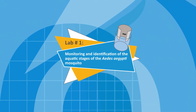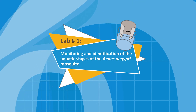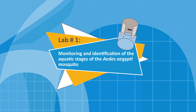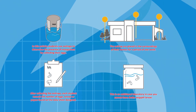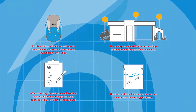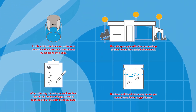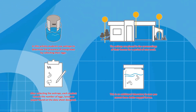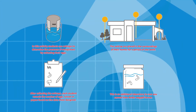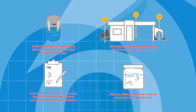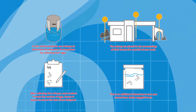Lab number one: Monitoring and identification of the aquatic stages of the Aedes aegypti mosquito. In this activity, students use Ovi traps to determine the presence of mosquitoes by collecting their eggs. The Ovi traps are placed in the surroundings of their homes for a period of one week. After collecting the Ovi traps, each student records the number of eggs, larvae, or pupae found on the data sheet.